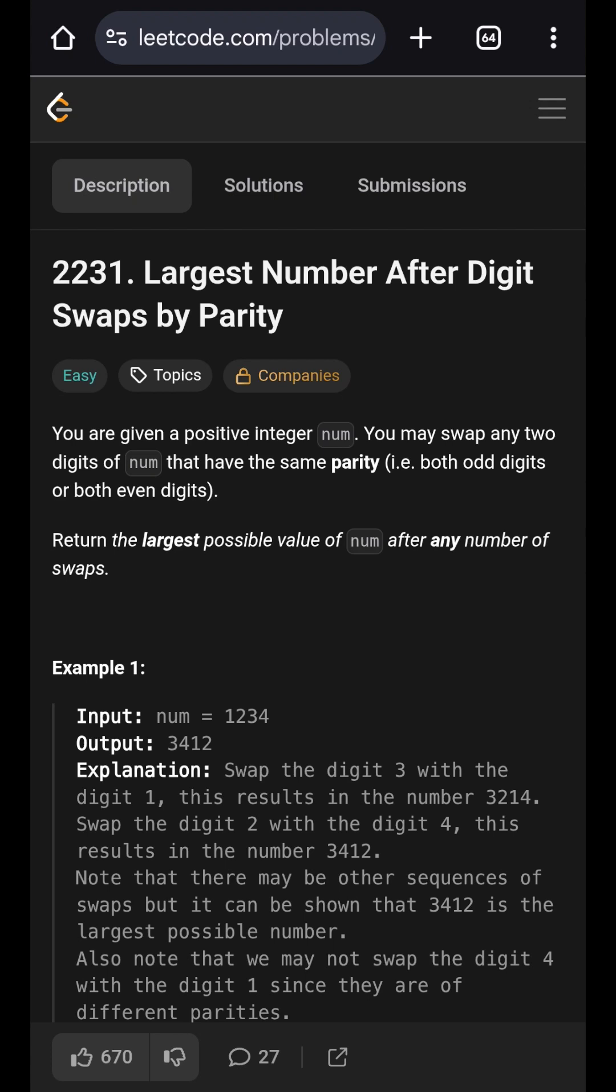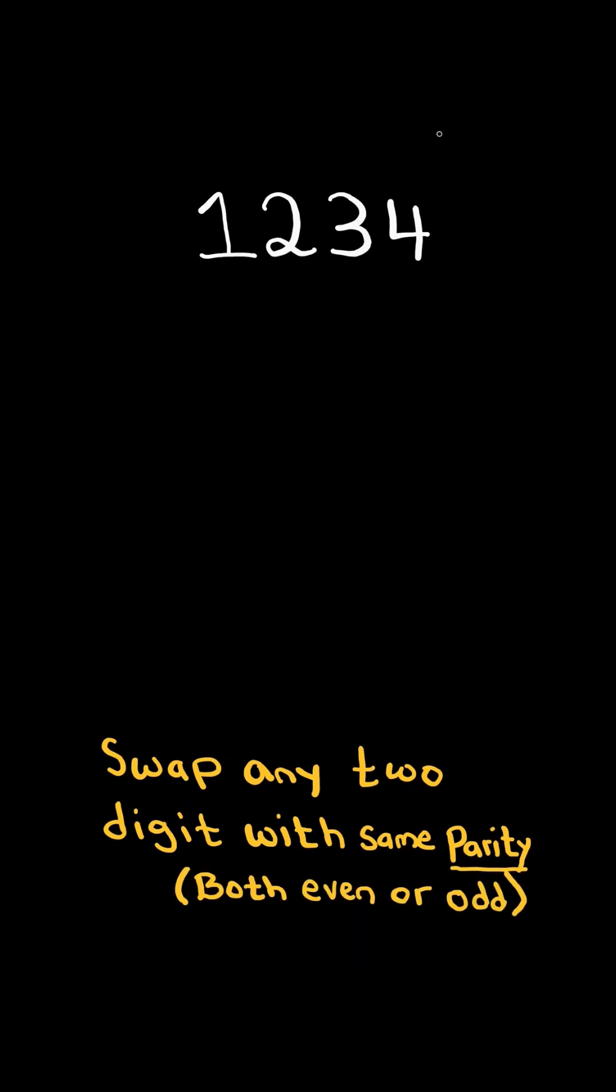Largest number after digit swaps by parity. Given a positive integer, we can swap any two digits that have the same parity. By parity, we mean both even or odd.